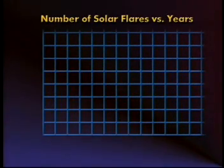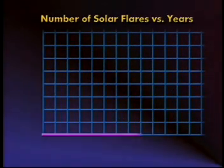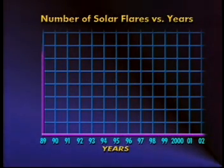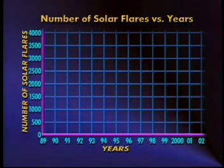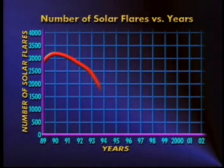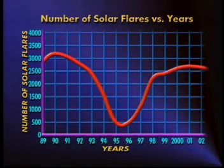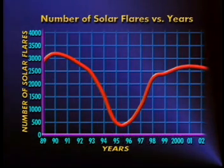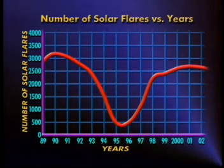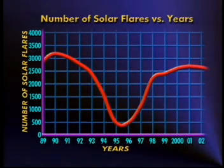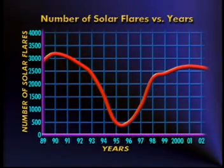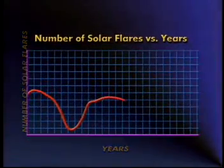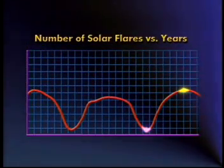Let me show you on this graph. Let's look at the graph of actual solar flare data from 1990 to 2001. The title of this graph is 'Number of Solar Flares versus Years.' The horizontal axis, or x-axis, represents years, and the vertical axis, or y-axis, represents the total number of flares recorded. From the graph, we can see that we have a solar maximum in 1990 and one in 2001, and a solar minimum at some point between 1995 and 1996. This graph shows us that the Sun does have a solar cycle of about 11 years, and from this graph we can predict when the next solar maximum and minimum will occur.